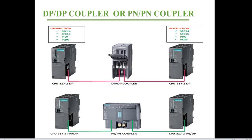For the second communication type, we use a coupler — this is the most common and most used in practice because the coupler separates the two networks. For Profibus, if the two PLCs have the same Profibus address, there is no option to connect them directly, so we must use the coupler to solve this problem.